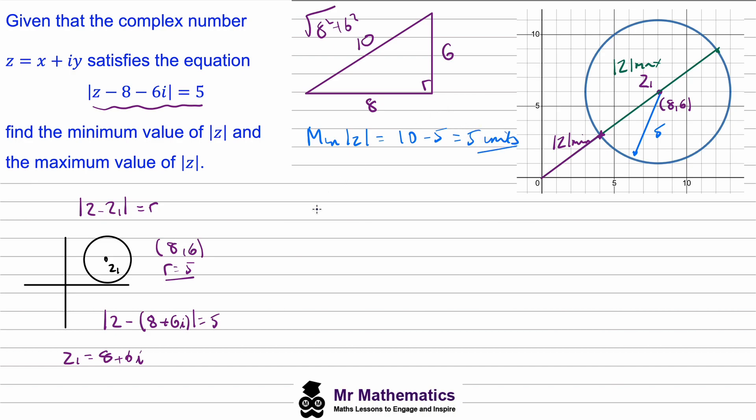We can work out a similar idea for the maximum magnitude of z. We know that this length is 10 and we need to add on 5 more units here. So the maximum magnitude would be the 10 plus 5. This will give us 15 units.